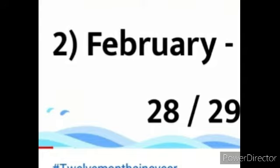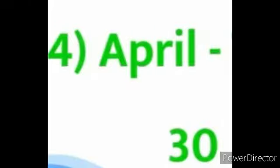February has 28 or 29 days. Next: M-A-R-C-H, March. It has 31 days. A-P-R-I-L, April. It has 30 days.